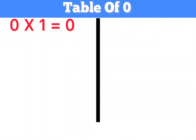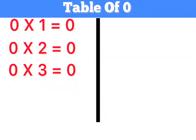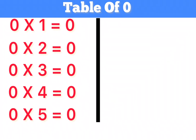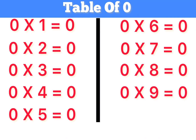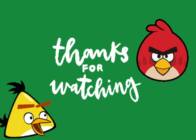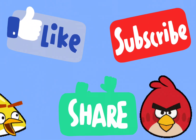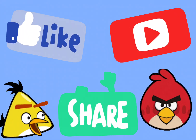Table of 0. 1s are 0, 2s are 0, 3s are 0, 4s are 0, 5s are 0, 6s are 0, 7s are 0, 8s are 0, 9s are 0, 10s are 0.